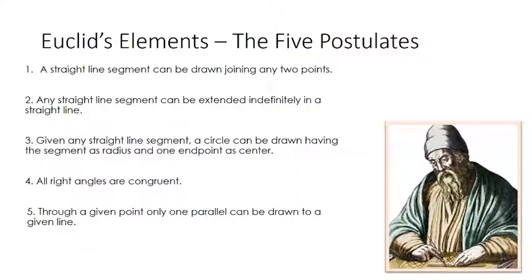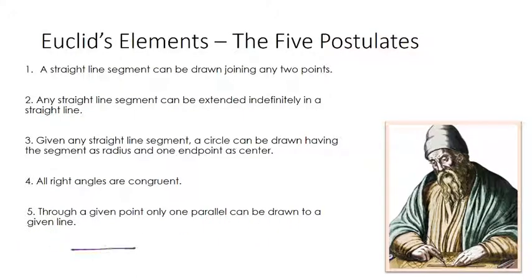Four: all right angles are congruent. And then lastly, five: through a given point, only one parallel can be drawn to a given line. This last one is actually a paraphrase of his fifth postulate. But if you have a line and a point not on that line, the paraphrase says there's only one parallel line that passes through that point.